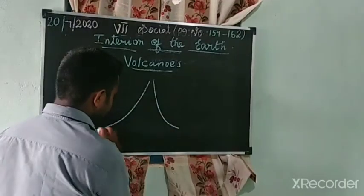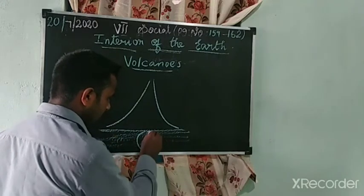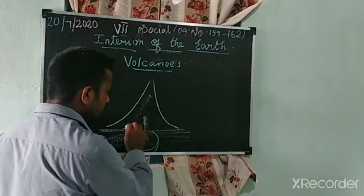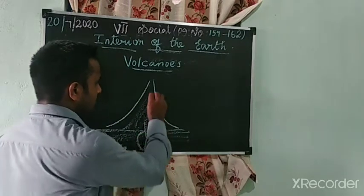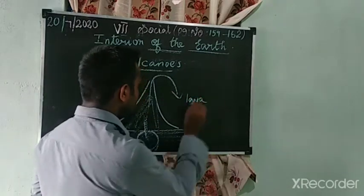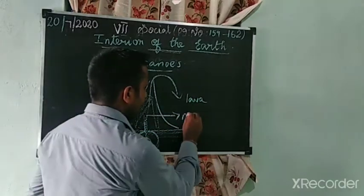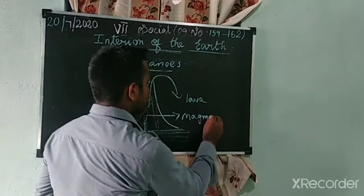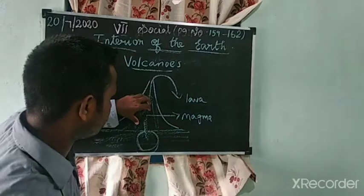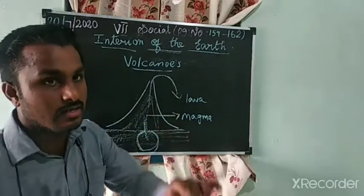From the earth's crust, changes will happen. This rock melts and becomes magma. This rock is changed to magma inside the earth. When it comes outside to the surface of the earth, it is called lava. So, the melting rock inside the earth is called magma, and the same magma on the surface of the earth is called lava.